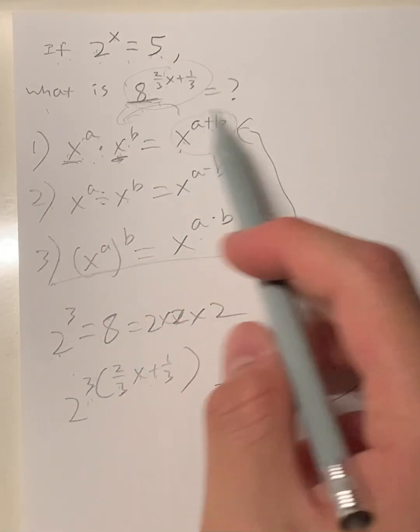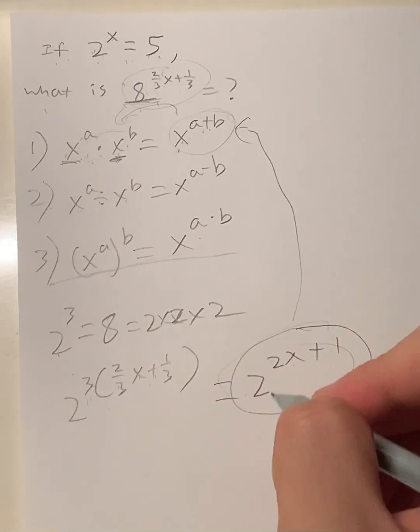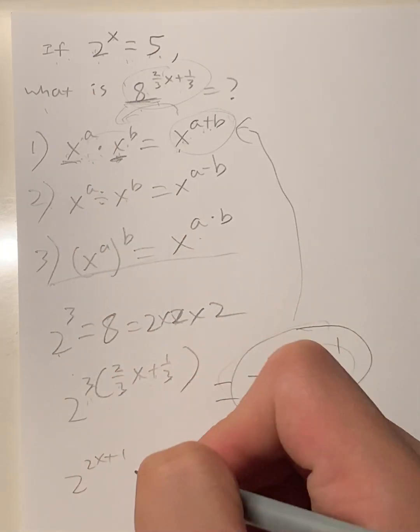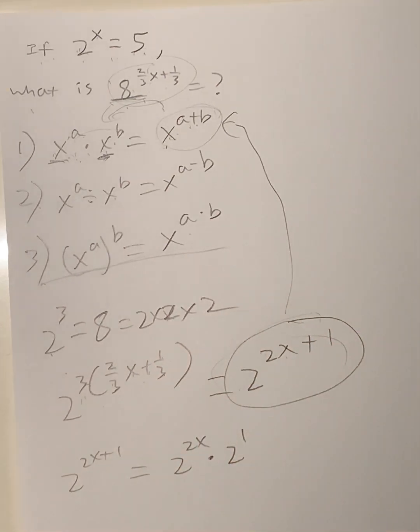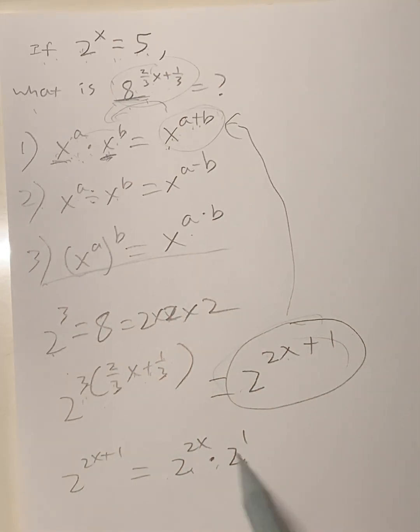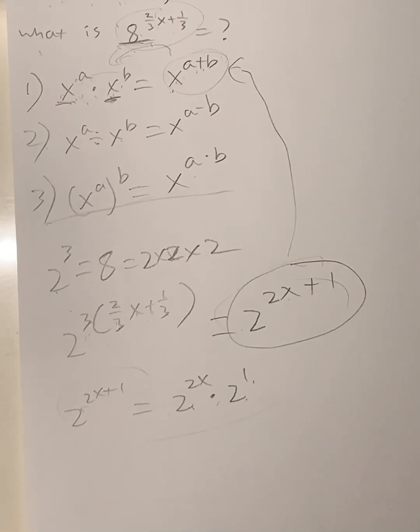So we're going to decompose this. 2^(2x+1) equals 2^(2x) times 2^1, right? When you multiply exponents with the same base, you add them. So that's why these two are equal.